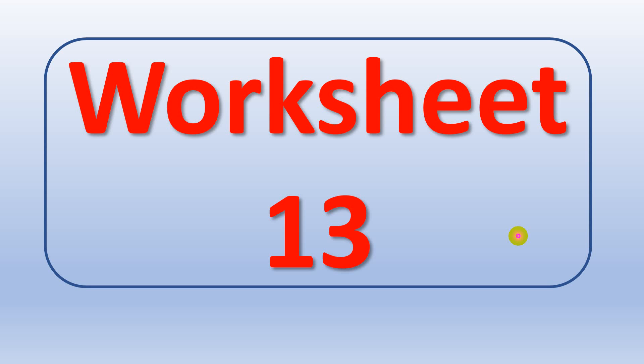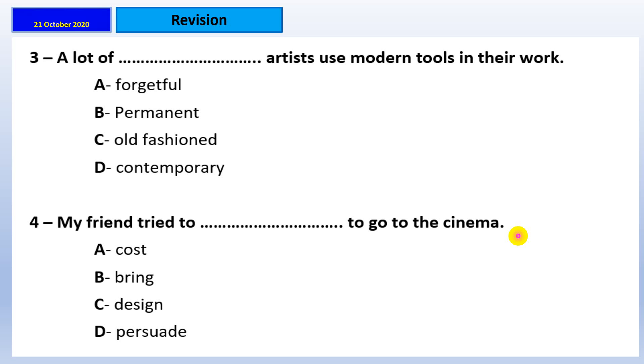Worksheet number 13. A lot of artists use modern tools in their works. Forgetful, permanent, old-fashioned, or contemporary. How can I answer this one? Read the sentence and search for the keyword. I have here modern tools. Yeah, contemporary. I told you before that contemporary means modern. When I'm talking here about the artists, they are using modern tools, so they are contemporary. That's right. My friend tried to go to the cinema. What do you think about this one? Yeah, let us see. Persuade to go to the cinema.